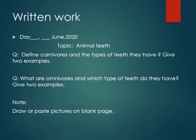Now it's time to move towards written work. First, write the index, then draw a margin line, write the day and date, write the topic and underline it. Question number one: Define carnivores, the types of teeth they have, and give examples. Write the answer neatly. Question number two: What are omnivores and which type of teeth do they have? Give examples. You are also supposed to draw or paste pictures on the blank page. I hope you will do the work neatly. Best of luck!